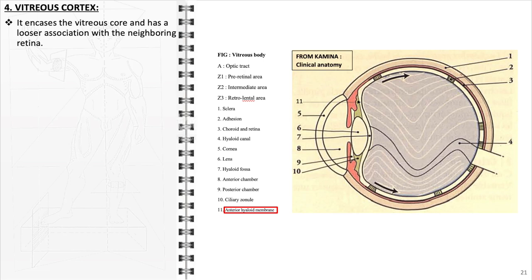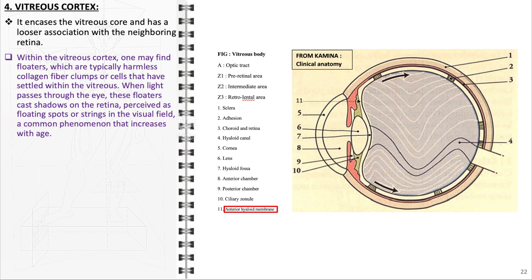However, the attachment of the vitreous cortex to the retina is generally weaker, which can result in posterior vitreous detachment in older adults. Floaters, typically benign clumps of collagen fibers or cells within the vitreous cortex, can cast shadows on the retina when light passes through the eye. These are perceived as floating spots or strings in one's visual field, a phenomenon that becomes more common with age.